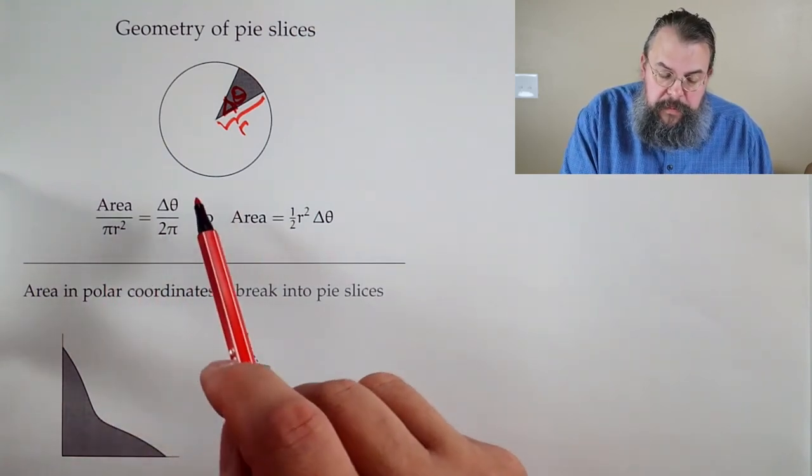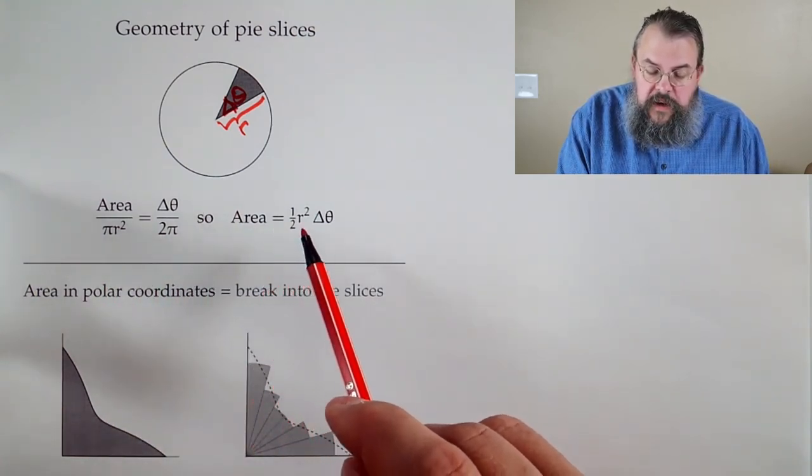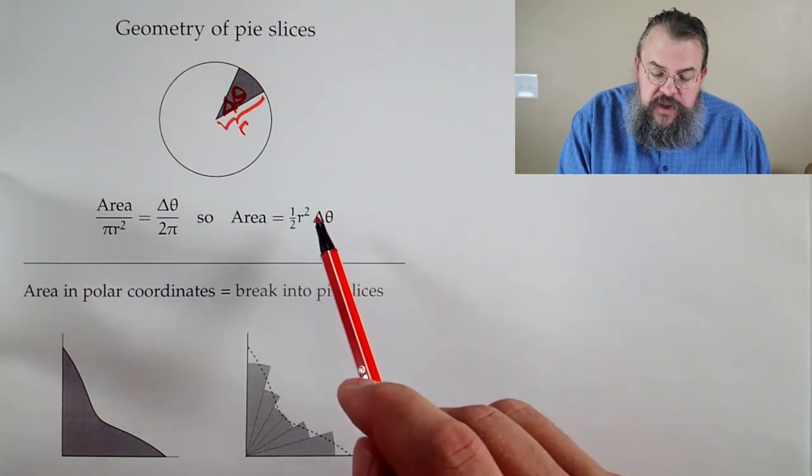Well, multiply through by pi r squared. And we get that the area is one half radius squared times the change in our angle.